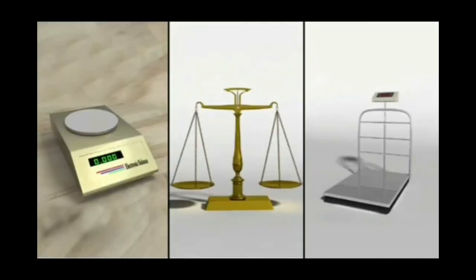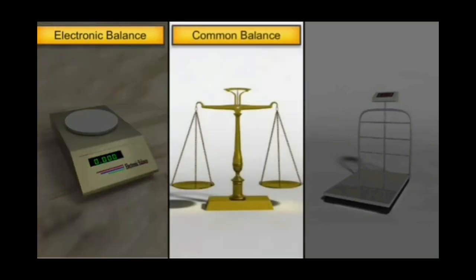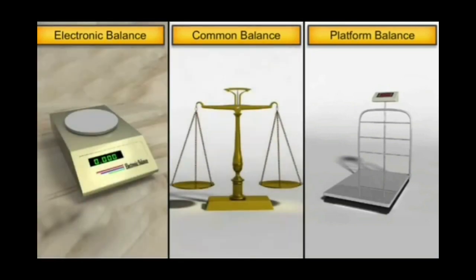Now these are the devices which we use to measure mass. First one, the electronic weighing machine we usually see in jewelry shops. Next one is common balance which is very common we usually see in our shops. The other one, platform balance we usually see in railway stations, bus stations, etc. to weigh our mass.